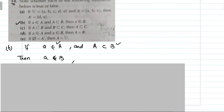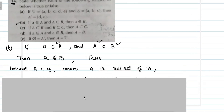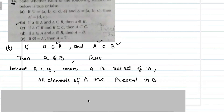Part B: If a belongs to set A, and set A is a subset of B, then a belongs to set B. This statement is TRUE. The reason is that since A is a subset of B, all elements of A are present in B. Therefore, a — being an element of A — is also present in B.